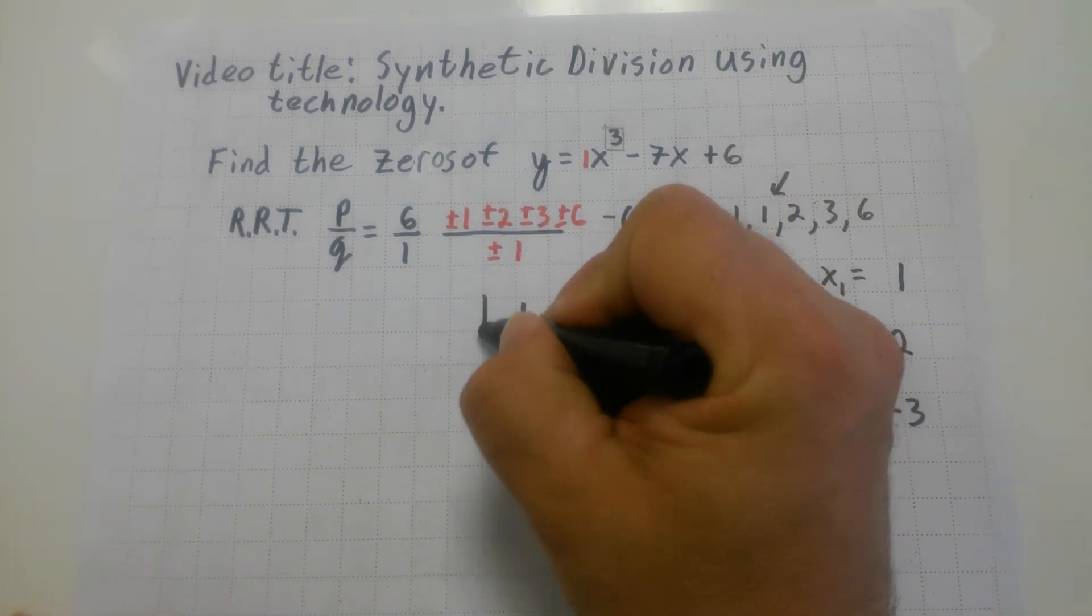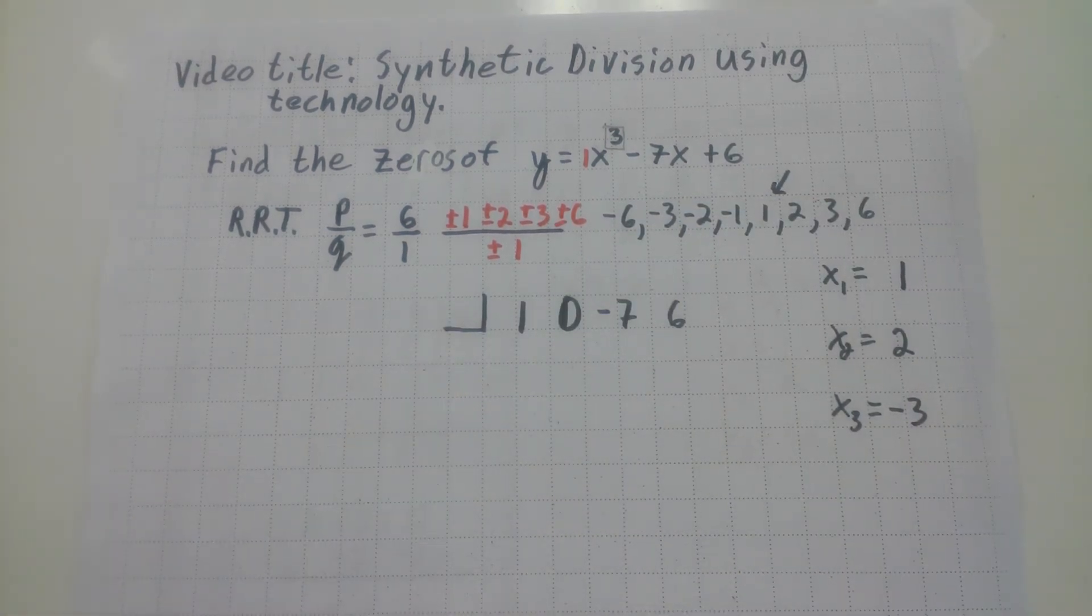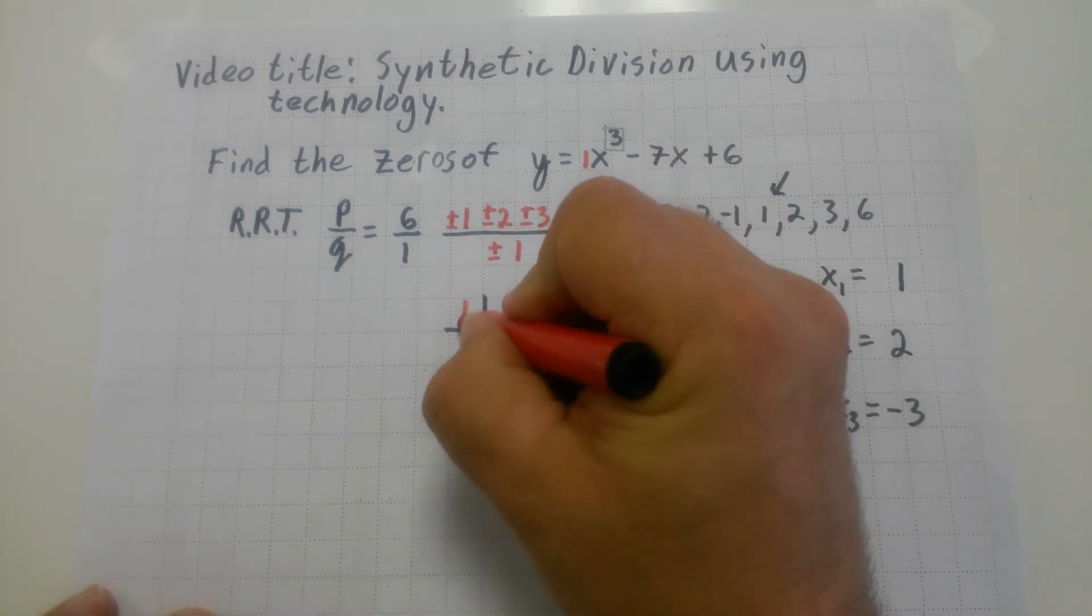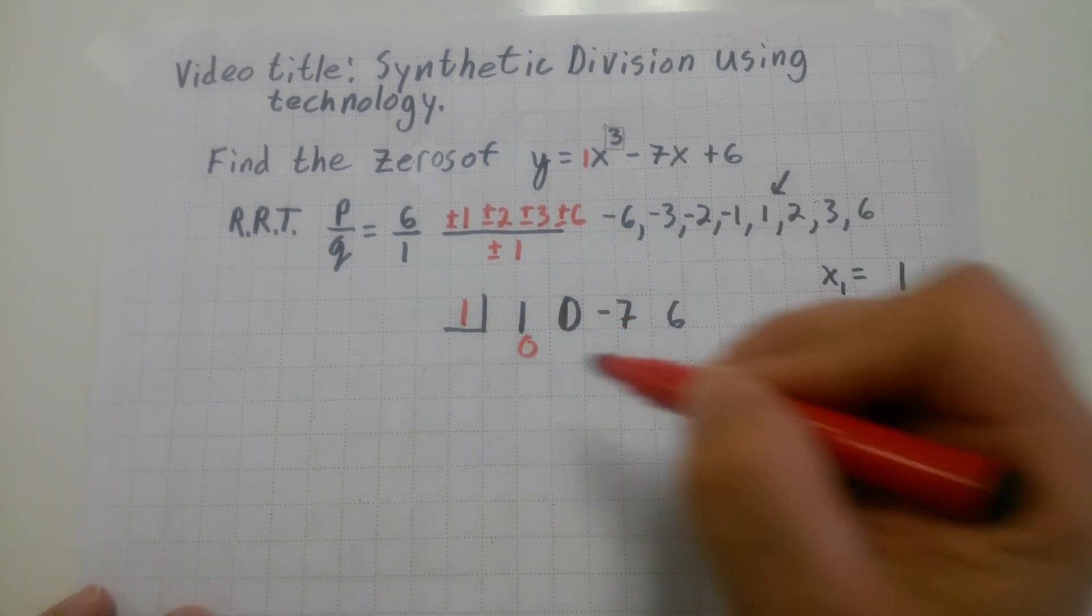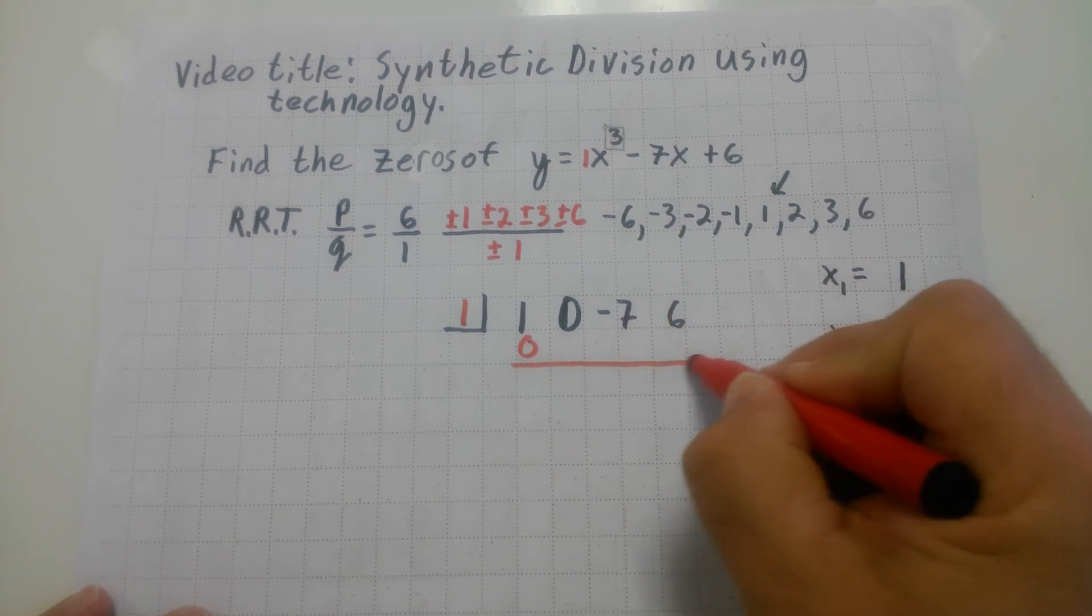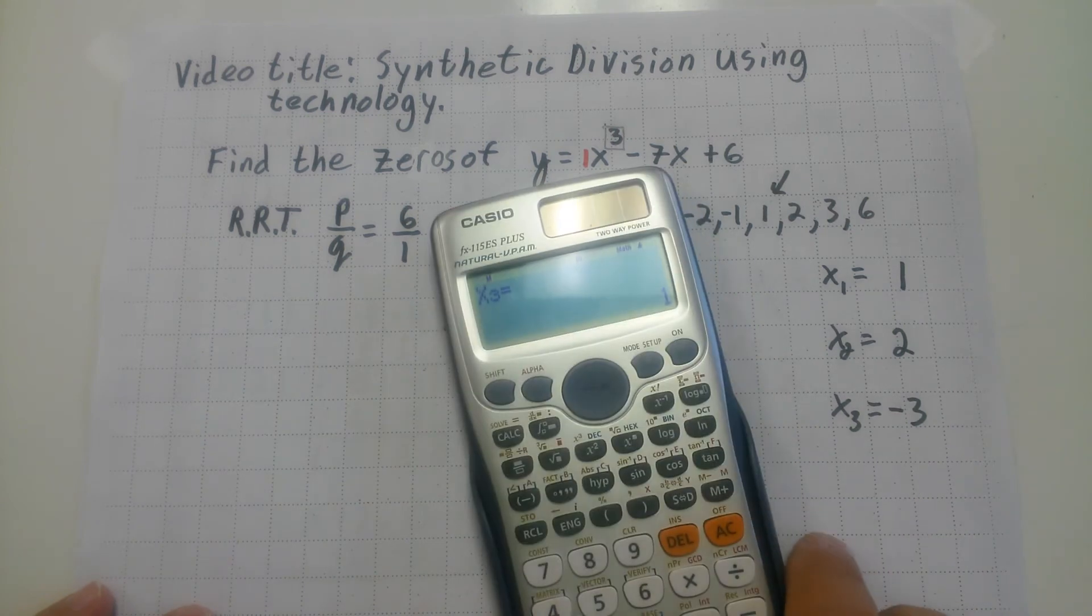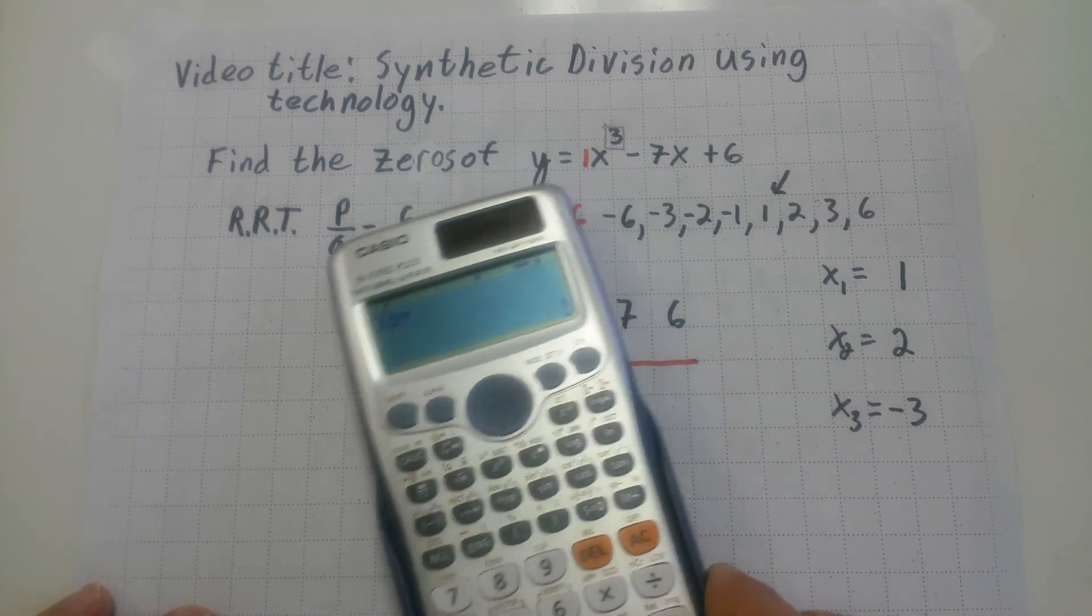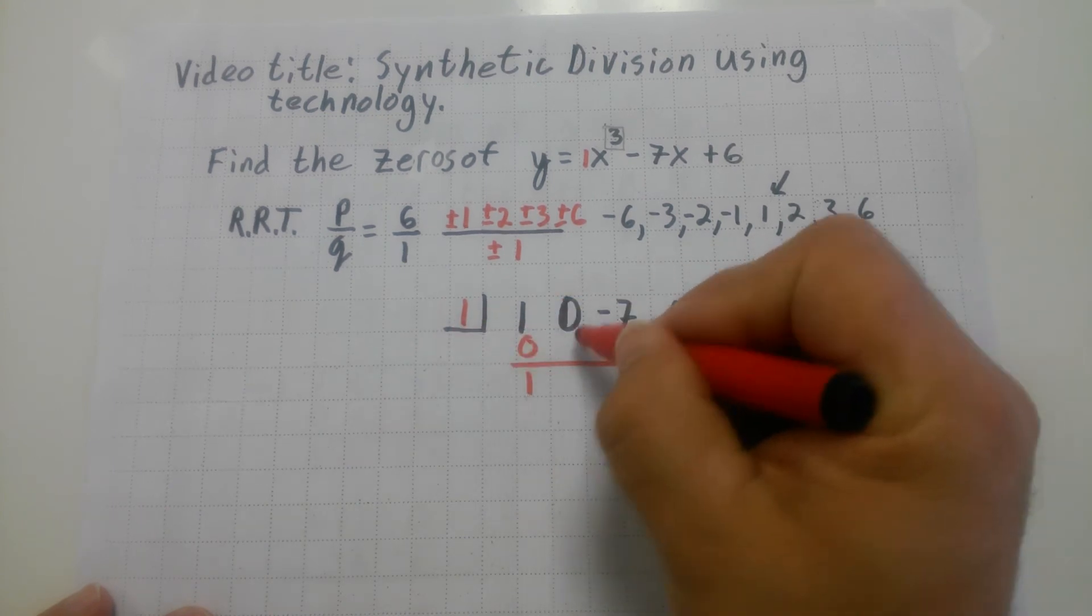I'm going to take that actual answer and put it in my little placeholder there. And I'm going to go through the process of synthetic division. I know this works. It's right there. What's one plus zero? One. What's one times one? One.